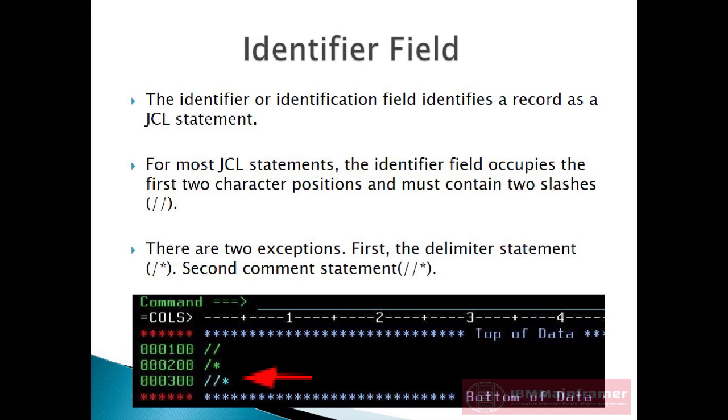Second, the identifier field for a comment statement is three characters long. The first two columns contain forward slashes and the third contains an asterisk. It is used for single line comment statements.